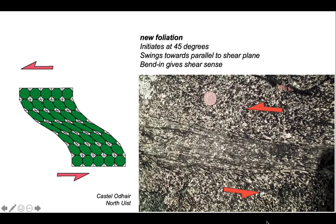It's too weak at that stage to be seen in the natural outcrop. We're starting picking it up at about 30 degrees, but then it swings in to parallel to the shear zone. So the bending gives the shear sense.